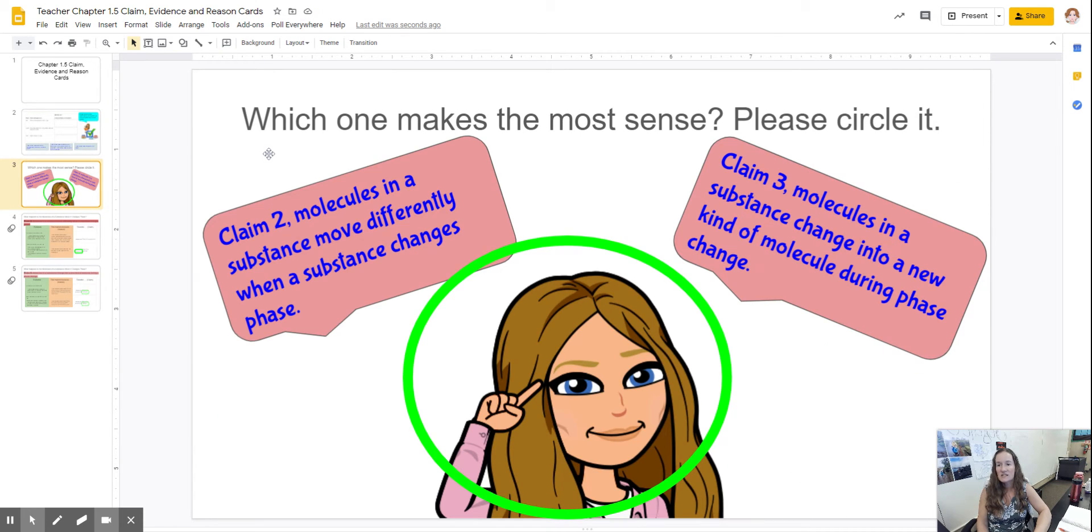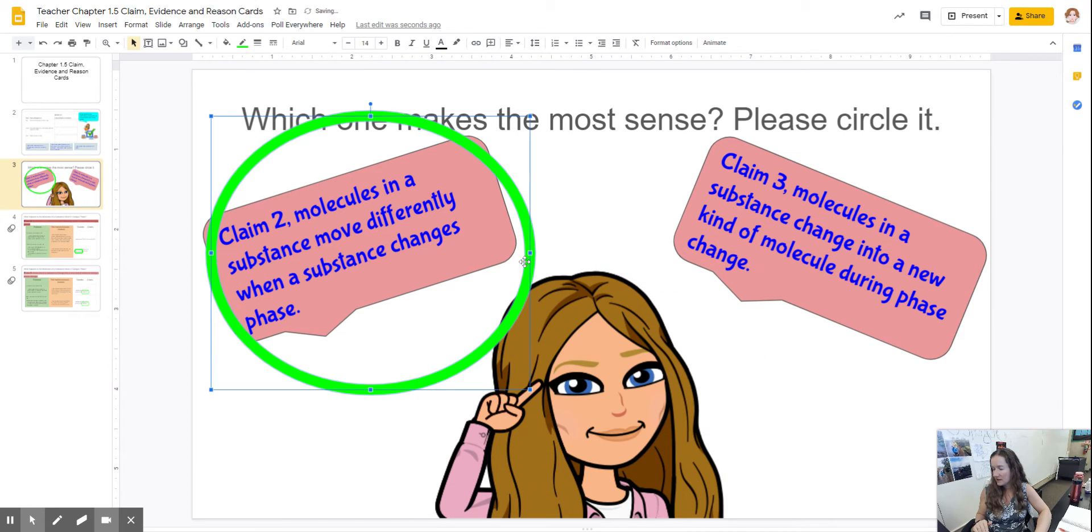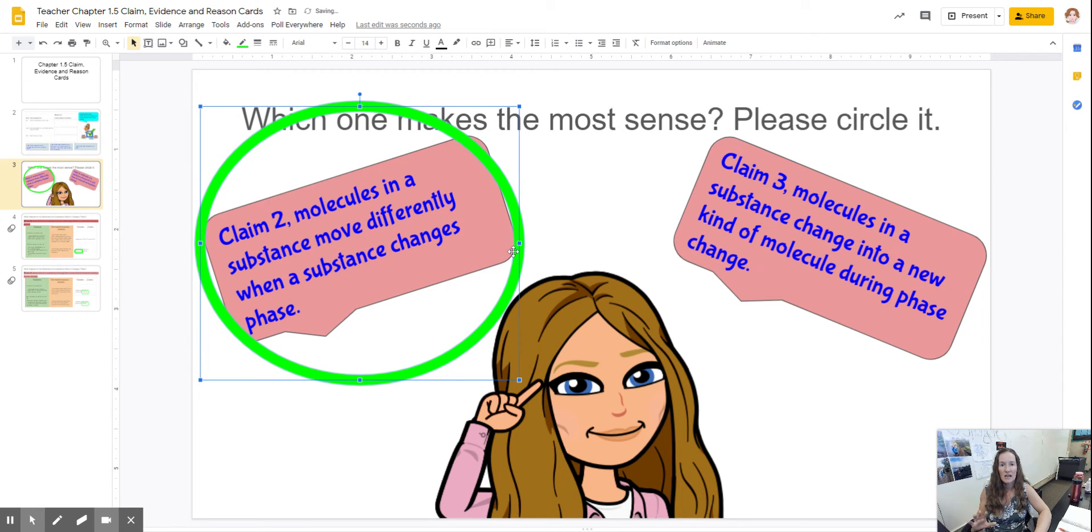And then we're saying which one of these claims makes the most sense. Claim 2: molecules in a substance move differently when they change phases, or claim 3: molecules in a substance change into a new type of molecule during phase change. You're supposed to take the circle and move it over the one that you feel is most accurate. We said that claim 2 is most accurate based on the evidence we've gathered so far.